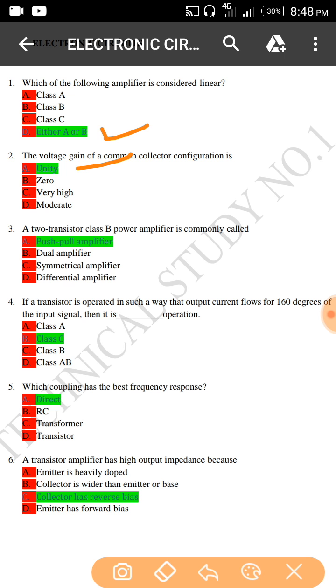A two transistor Class B power amplifier is commonly called... Class B, basically this is a push-pull amplifier.